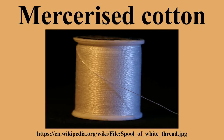The process did not become popular until H.A. Lowe improved it into its modern form in 1890. By holding the cotton during treatment to prevent it from shrinking, Lowe found that the fiber gained a lustrous appearance. The process was taken to the DMC company in Mulhouse, France by Jean Dolphys in the 19th century.